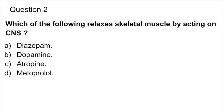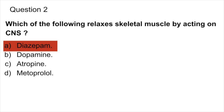Question 2. Which of the following relaxes the skeletal muscle by acting on CNS? Options: diazepam, dopamine, atropine, and metoprolol. Answer: diazepam. Anti-anxiety drugs depress the post-synaptic pathways in the spinal cord and the brain. Examples of the drugs are diazepam, meprobamate, chlordiazepoxide. So, the answer is diazepam.